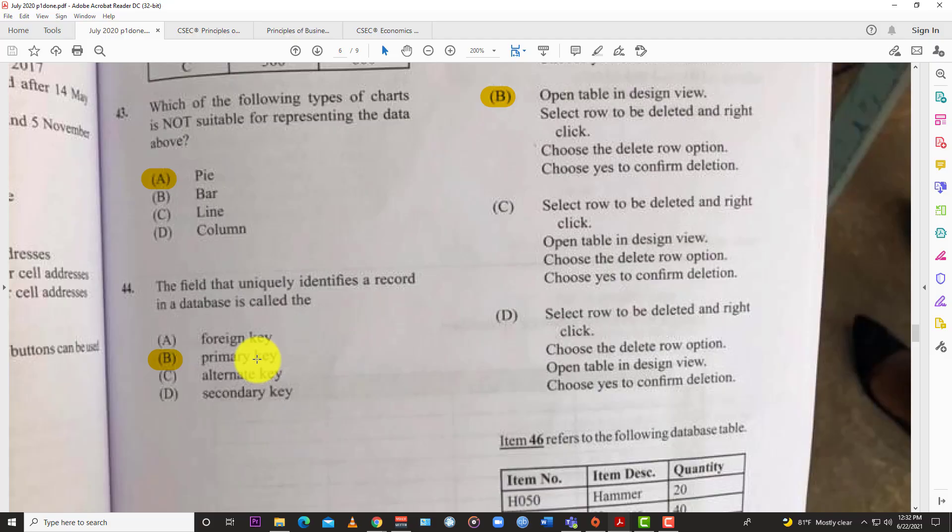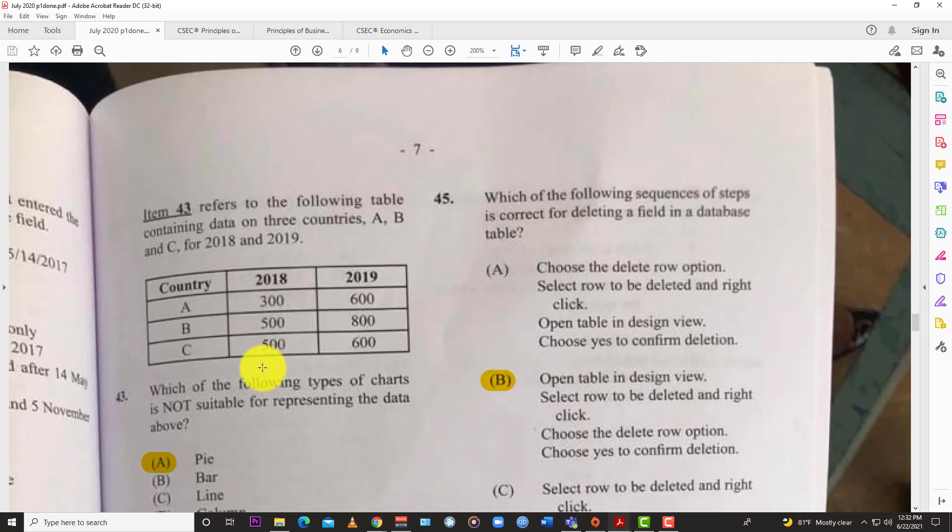Question 44: The figure that uniquely identifies a record in a database is called the A, primary key.